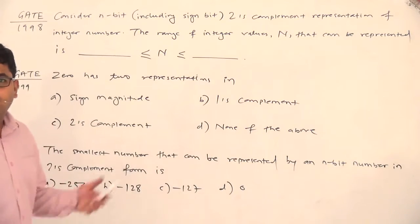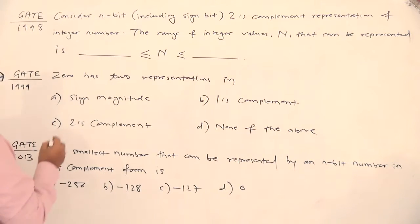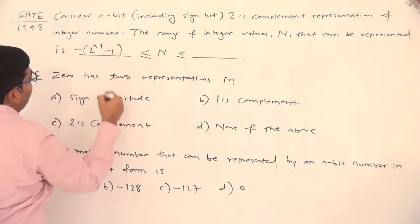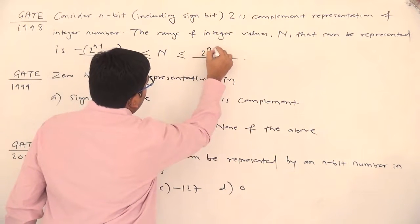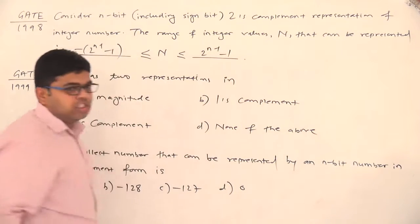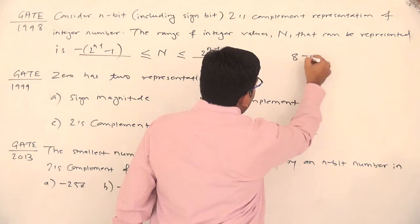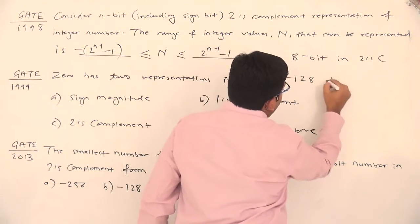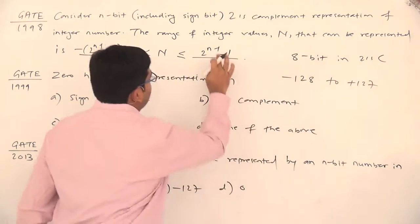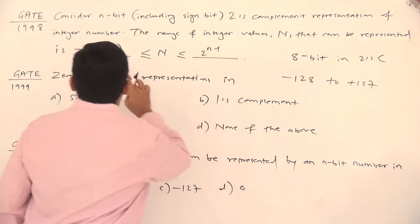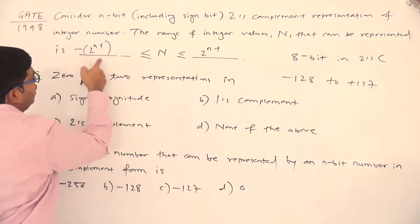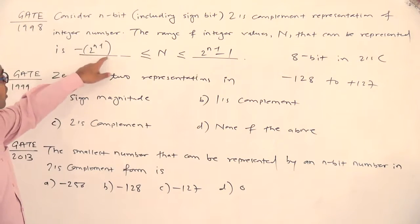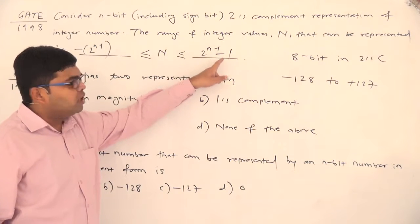Now if you refer to the chart or the table that we have drawn, the range will be given by minus 2 to the power n minus 1 to plus 2 to the power n minus 1 minus 1. So if it's an 8-bit number, for example, in 2's complement the range will be minus 128 to plus 127. So range will be minus 2 to the power n minus 1 to 2 to the power n minus 1 minus 1.